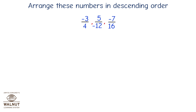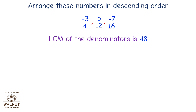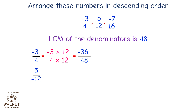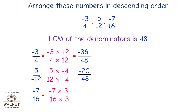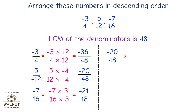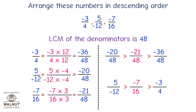Arrange these numbers in descending order: minus 3 upon 4, 5 upon minus 12, minus 7 upon 16. LCM of denominators is 48. Minus 3 upon 4 equals minus 36 upon 48. 5 upon minus 12 equals minus 20 upon 48. Minus 7 upon 16 equals minus 21 upon 48. So minus 20 upon 48 is greater than minus 21 upon 48 is greater than minus 36 upon 48. Therefore, 5 upon minus 12 is greater than minus 7 upon 16 is greater than minus 3 upon 4.